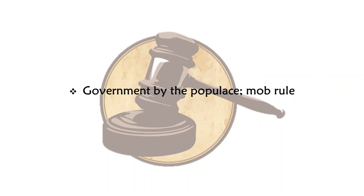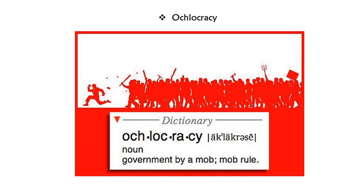Government by the populace, also called mob rule — what is that form of government called? The answer is ochlocracy. Ochlocracy is basically government by mob or mob rule.